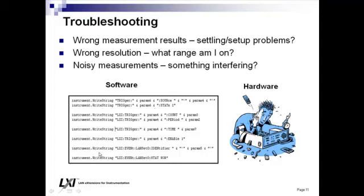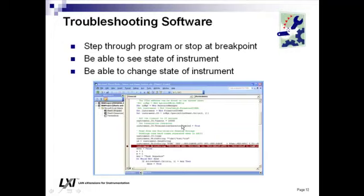Troubleshooting is a key factor in creating a test system. Do you get wrong measurement results? Do you have a settling or setup problem, wrong resolution on the voltmeter, the wrong range, or noisy measurements? What's happening inside the test system? Troubleshooting software is actually pretty easy — you step through your program and stop at a particular breakpoint to see what's happening in the software. But what's going on inside the instrument?